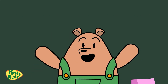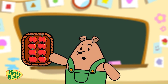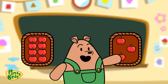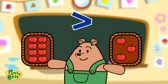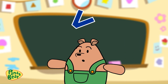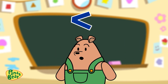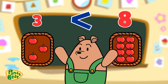Alright! Let's do another round! This time we're using apples. I have eight apples in my right hand and three apples in my left hand. Because eight is greater than three, we use the greater than symbol. So we write: eight is greater than three. Or we can use it the other way round with the less than symbol — three is less than eight.